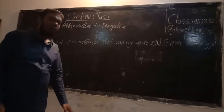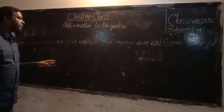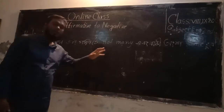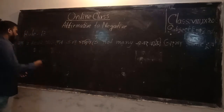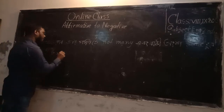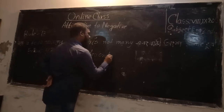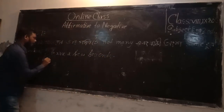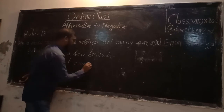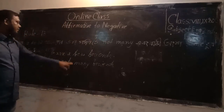Rule number thirteen. If we find the words 'a few' in a sentence, when converting to negative, we replace 'a few' with 'not many,' and the rest of the sentence stays the same. For example: 'I have a few friends.' The answer will be: 'I have not many friends.'